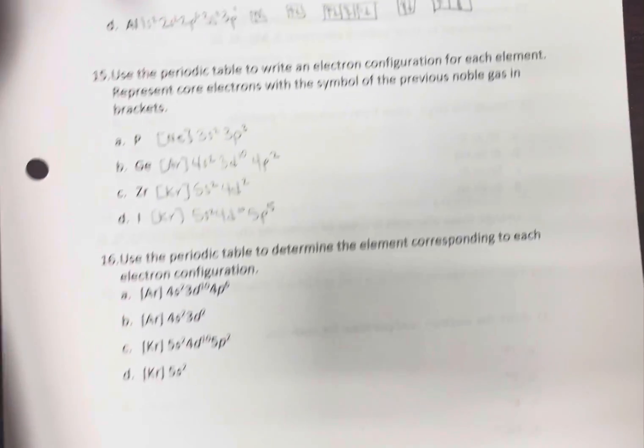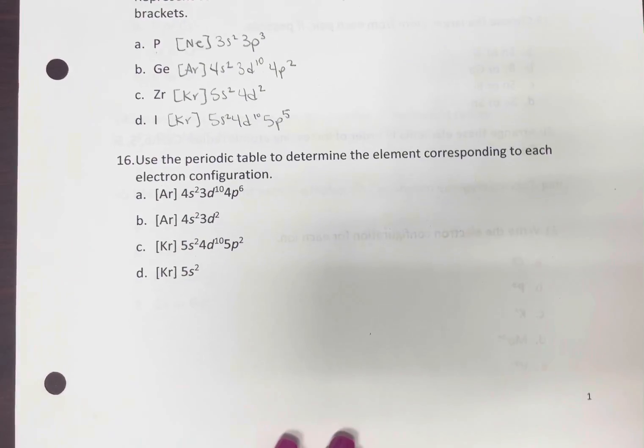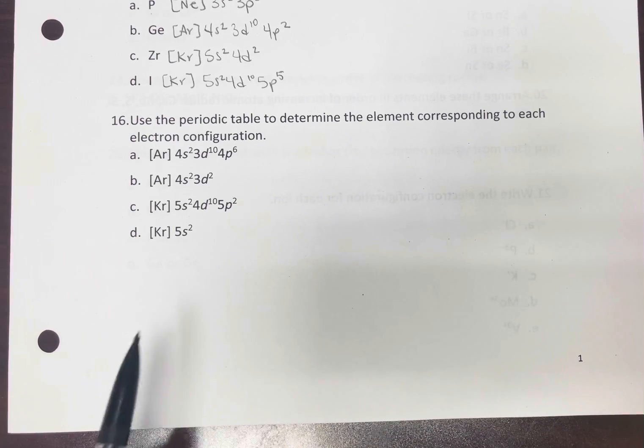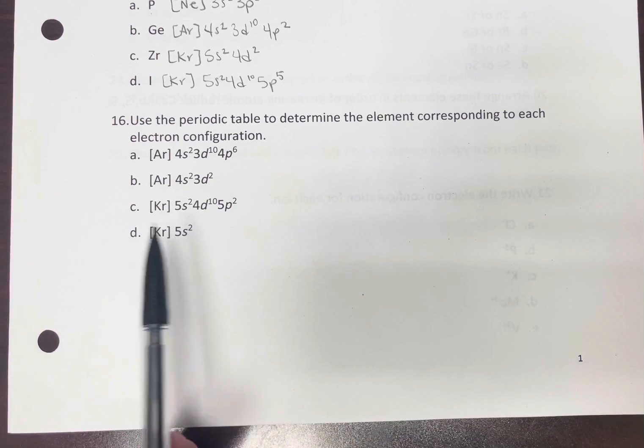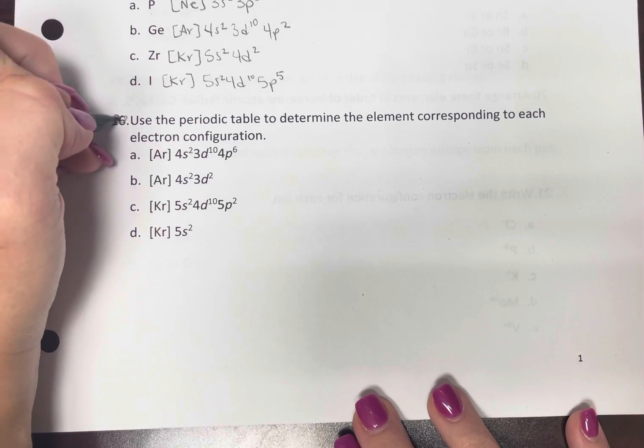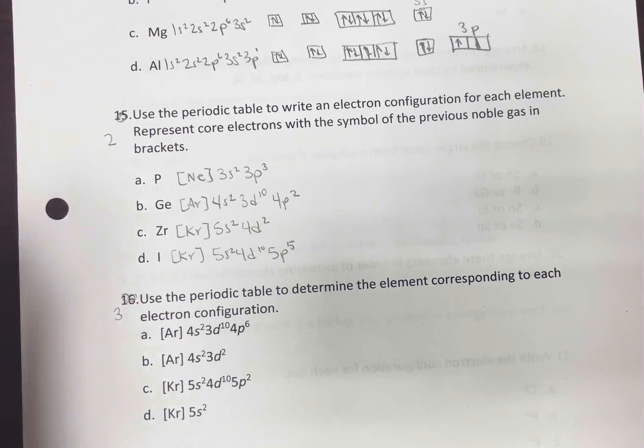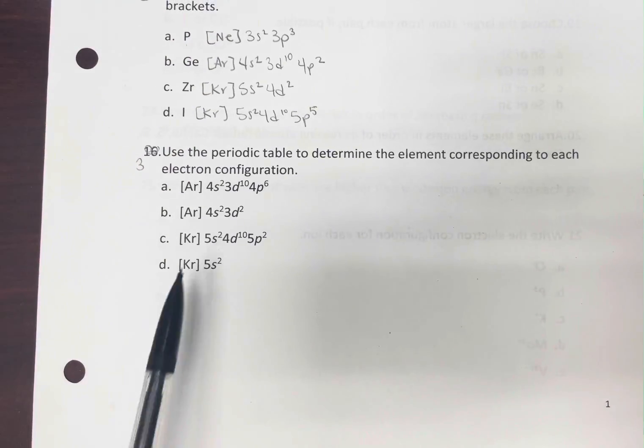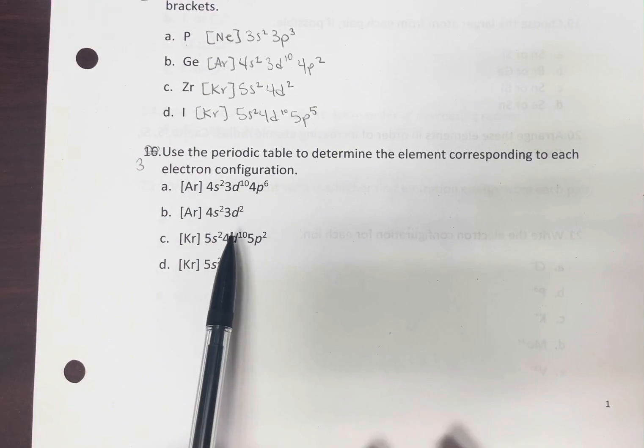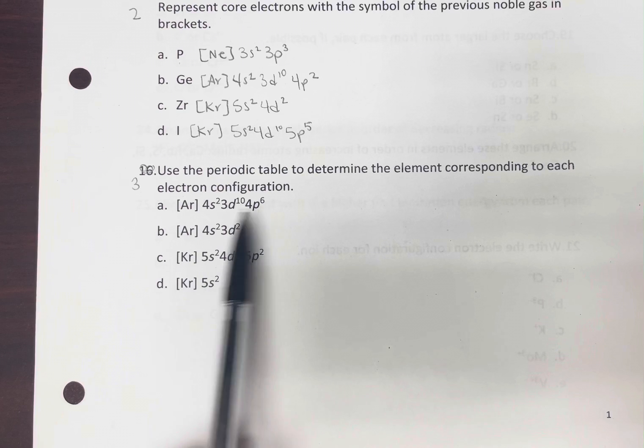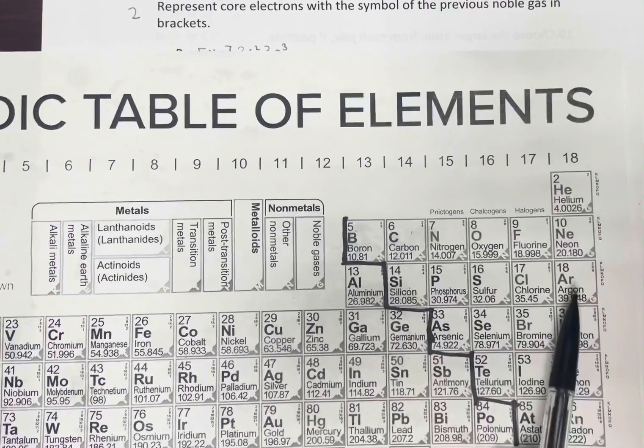All right. Now, let's use the periodic table and match these. Here, I'm going to renumber this 3, renumber this 2. Okay. I'm fixing that. Now, so these are abbreviated ones. So let's start with argon. Okay.